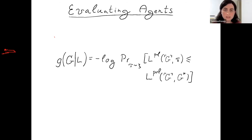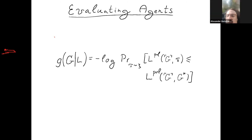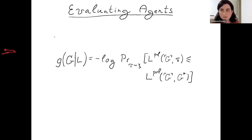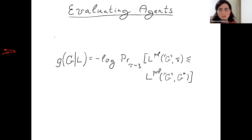Is there some loss function for which the agent does surprisingly well compared to the complexity of that loss function? If the complexity of the loss function is just equal to the complexity of the policy, that's not surprising because you can just hard-code the loss function to promote that policy. But if the agent does much better on some loss function than the complexity of that loss function would suggest, then it's doing surprisingly well — it's a sort of compression statement.